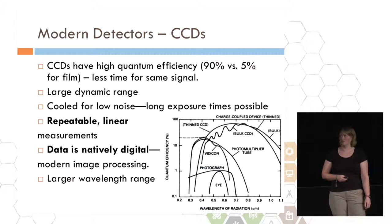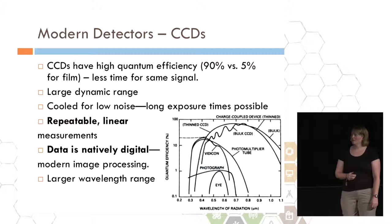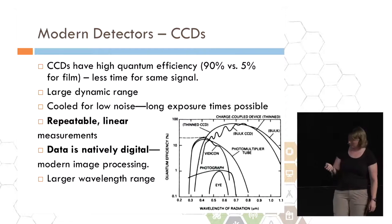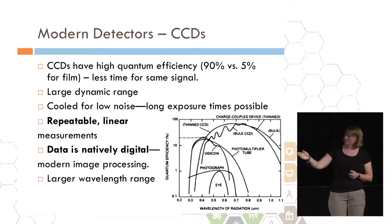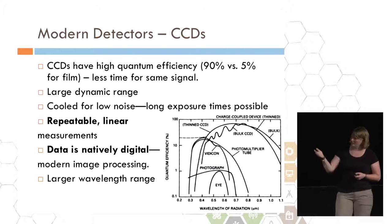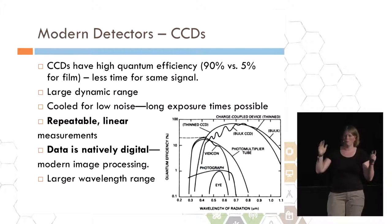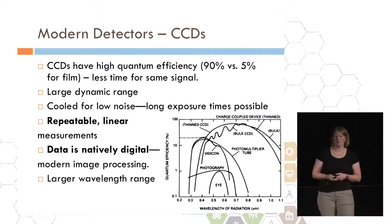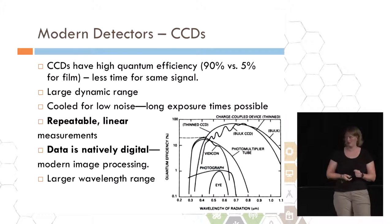Quantum efficiency is essentially how much of the light that hits the detector is actually detected as signal. Typical photographic film, maybe 5% of the light is recorded as signal. But the highest quality CCDs at this point have up to 90% quantum efficiency. This is one of the few plots I have in here. You can see at the bottom, we have what the eye is able to see. The x-axis is the wavelength of radiation. The eye can only see a very narrow range of visible light. The next curve up is what a traditional photograph can see, and you can see that the quantum efficiency on this log scale is around 1%. The other curves are increasingly advanced CCDs. Not only do they have much better efficiency, but they cover a much wider wavelength range.